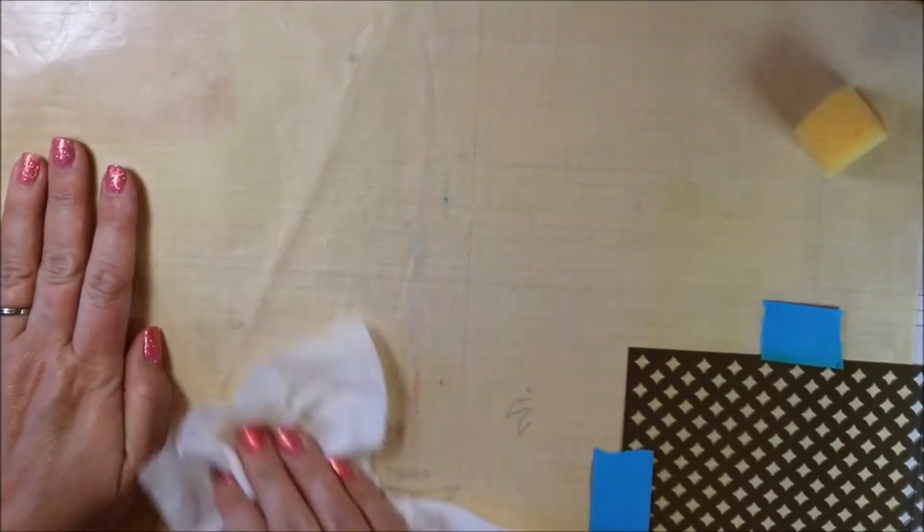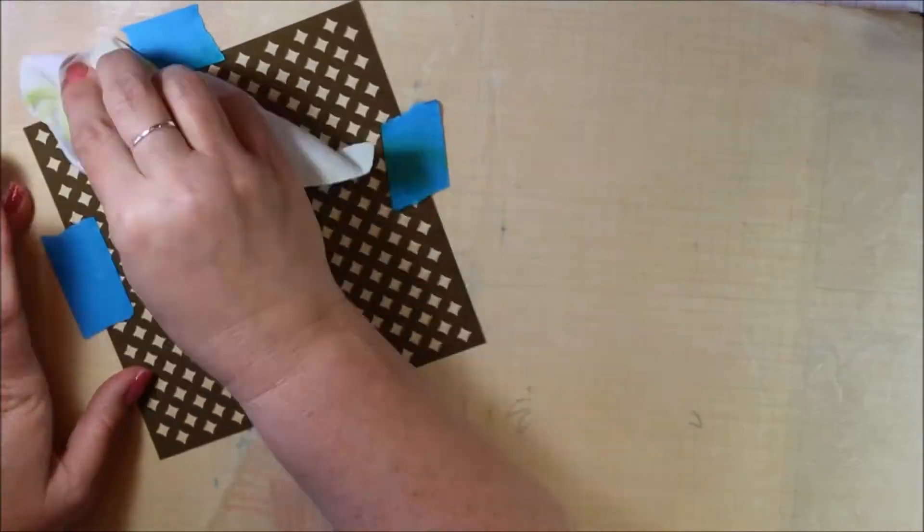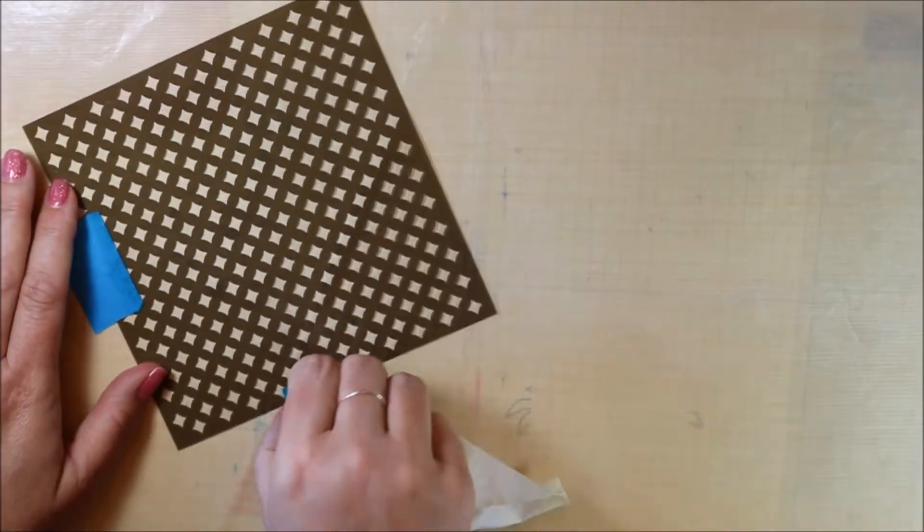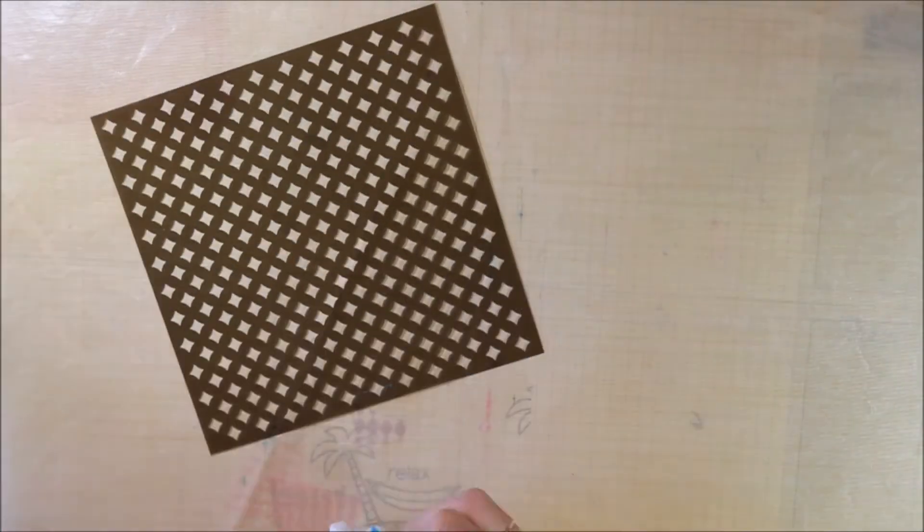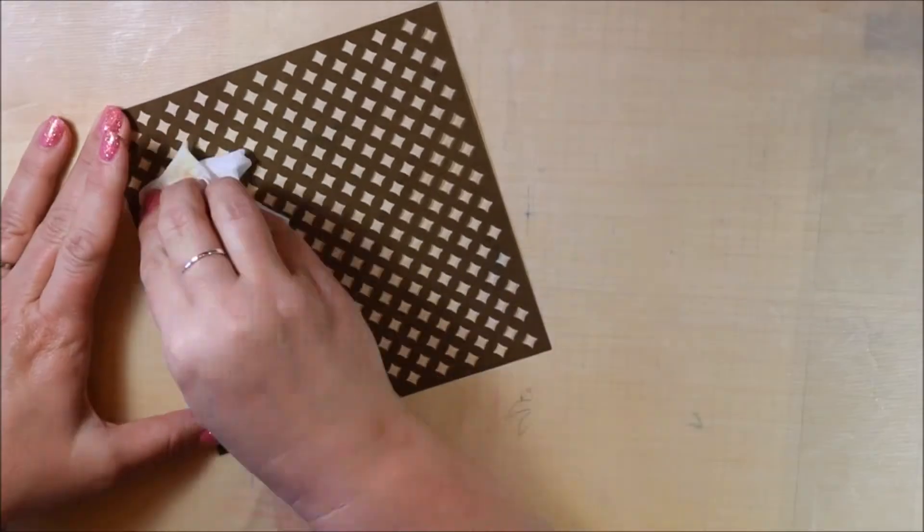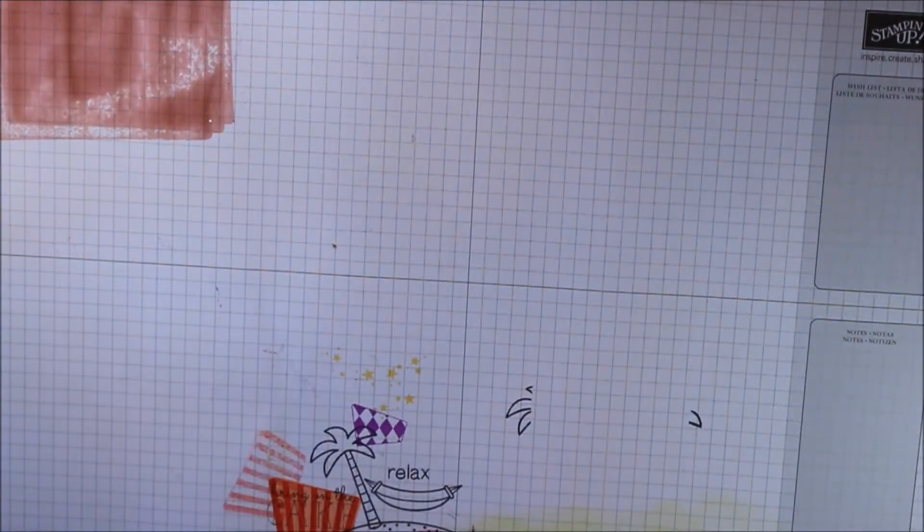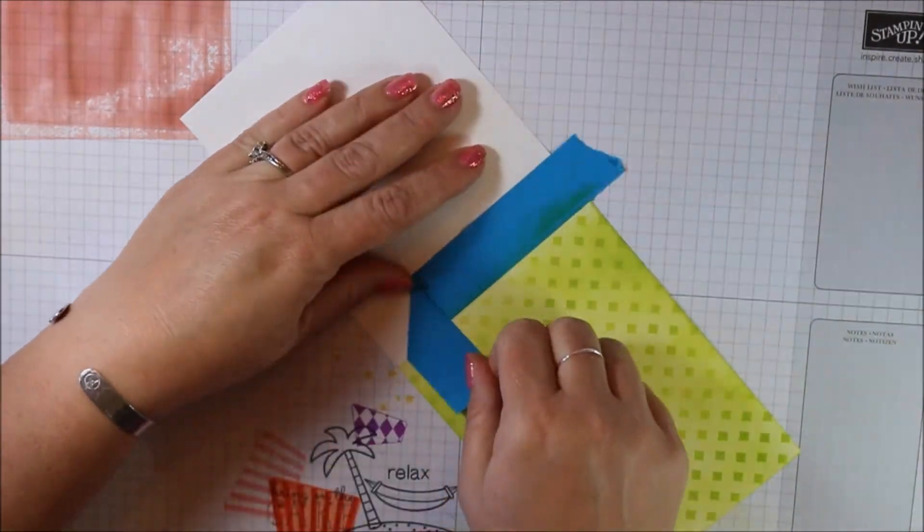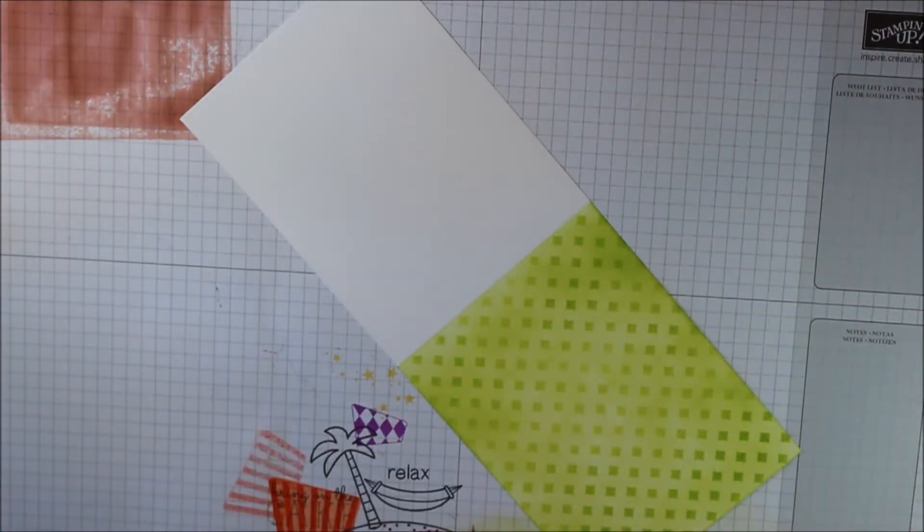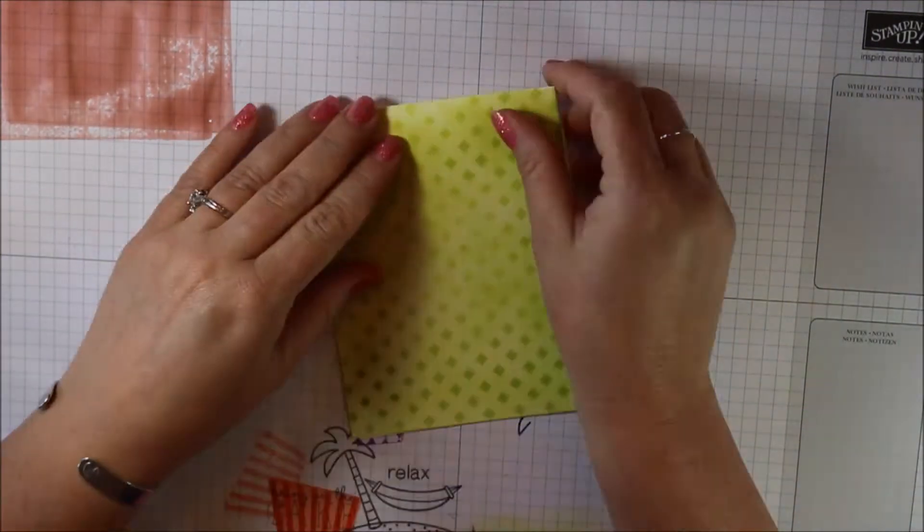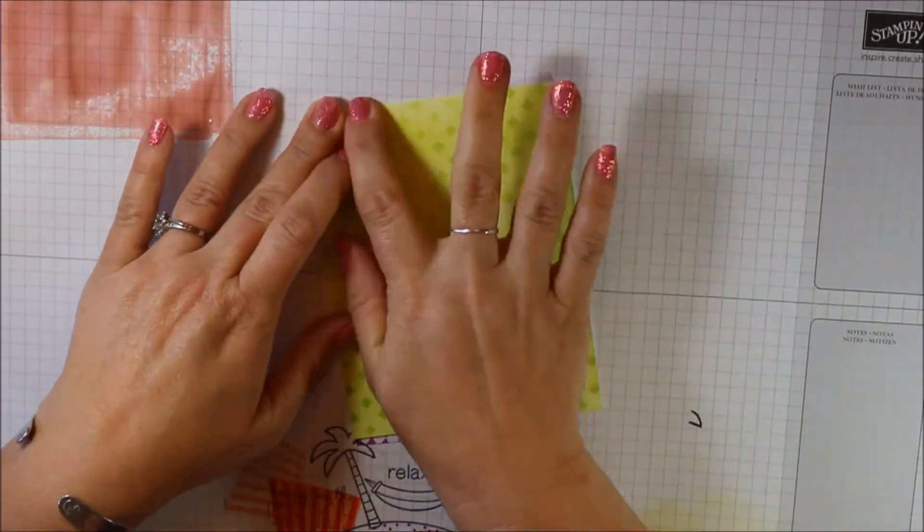But sometimes I do want it the same and if you want that, you just apply the same even pressure all along the stencil and you can go over it several times to get that deeper color. To peel off the post-it note tape, I just peeled it back on itself and then I'm going to fold it and use a bone folder to get that nice crisp edge.